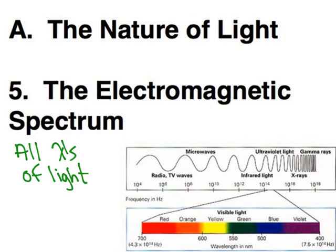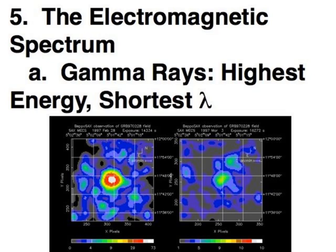So we're going to start with the very shortest wavelengths, and those are called gamma rays. So as you can see, these are the shortest wavelength, which means these are also the highest energy. So these are produced in very high energy situations.